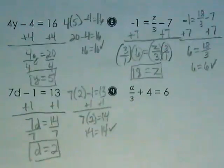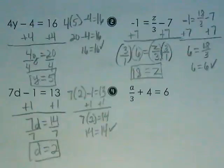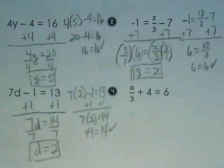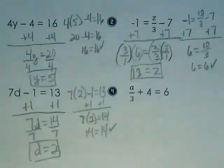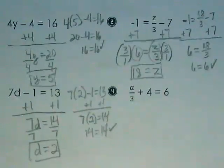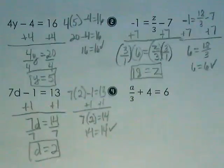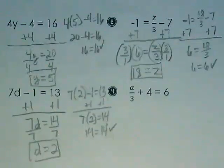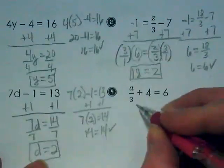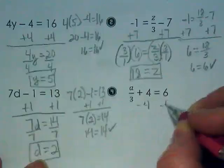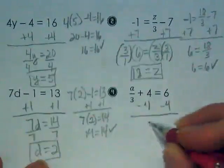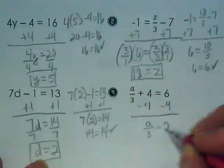For number 4, what is my first step? What are my like terms in this last equation? 4 and 6. I need to get them together. It's a positive 4 here, so we subtract it to move it to the other side of the equation. That leaves us with a over 3 is equal to 2.